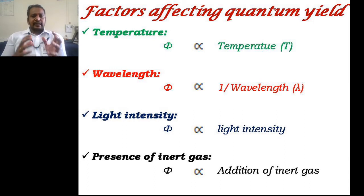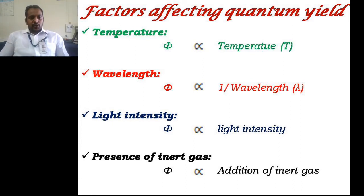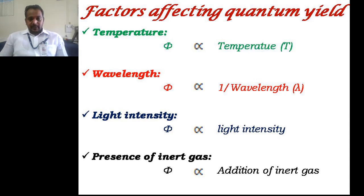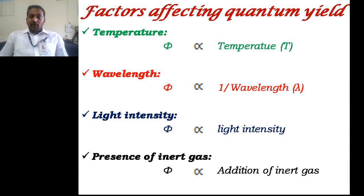As an example of temperature affecting quantum yield: the scientist Kuhn observed that the quantum yield of the photochemical decomposition of ammonia increases by 50% for every increase of around 100°C in temperature. Similarly, by increasing the temperature up to 500°C, he observed a seven-times enhancement in quantum yield.